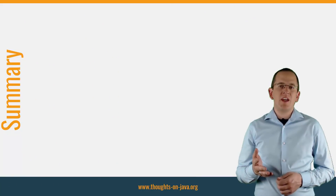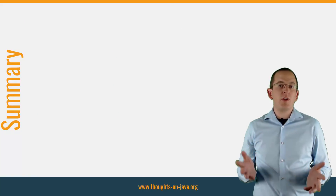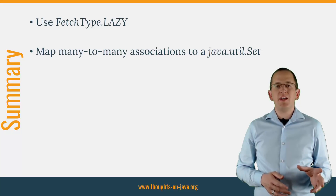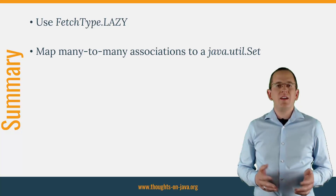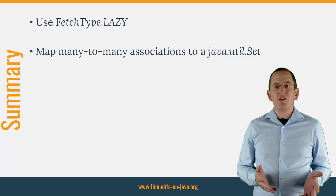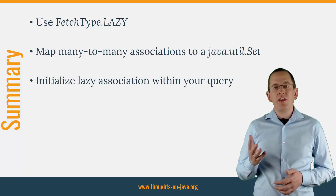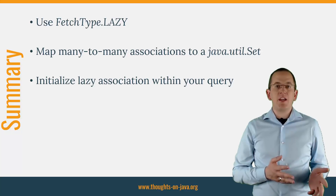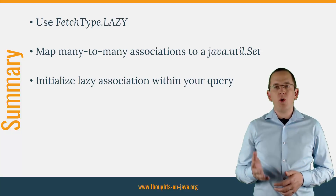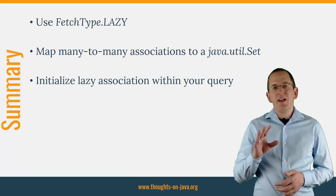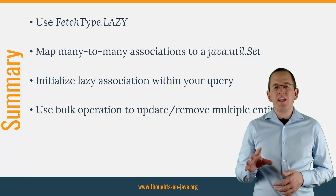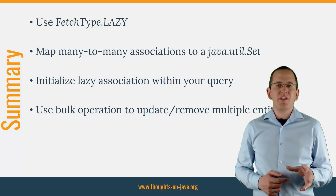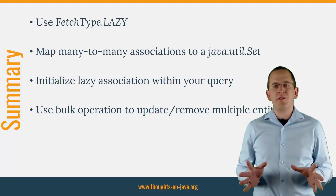As you have seen, the most common mistakes are not only easy to make, they are also very easy to avoid. When defining your associations, you should prefer FetchType.LAZY and map many-to-many associations to a java.util.Set. If your use case uses a lazily-fetched association, you should initialize it within the query that loads the entity — for example, with a joinFetch expression. Cascading and updating or removing multiple entities require more SQL statements than you might expect — it's often better to implement a bulk operation as a native JPQL or Criteria Query. By following these recommendations, you will avoid the most common mistakes that cause Hibernate to execute lots of unexpected queries.